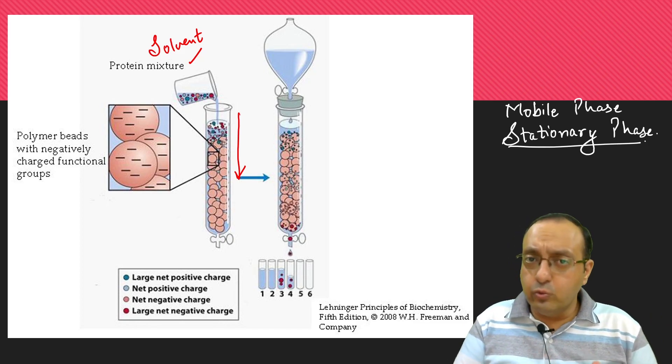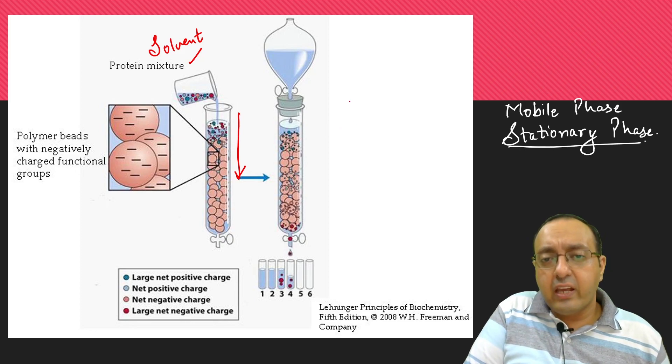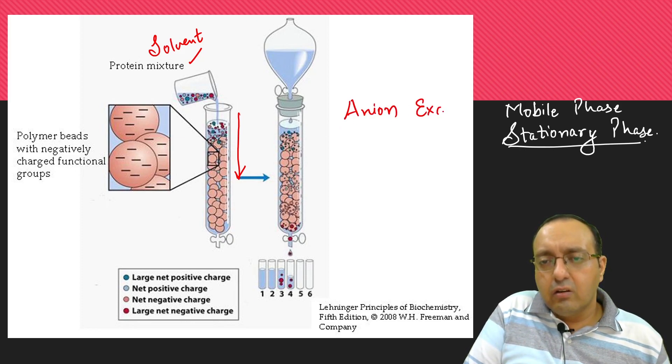Ion exchange chromatography is of two types. One is called anion exchange chromatography, and the other is called cation exchange chromatography.